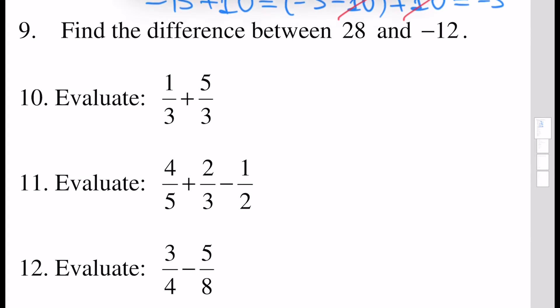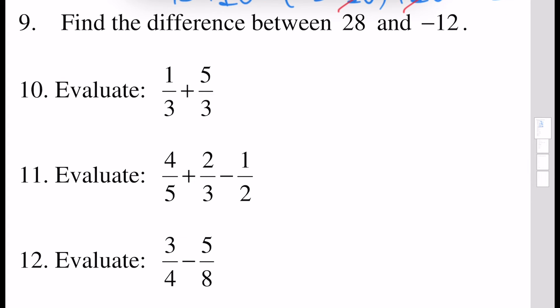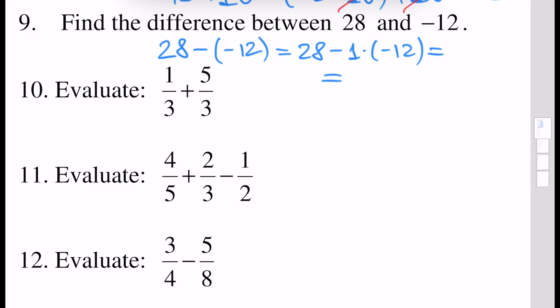Find the difference between 28 and minus 12. 28 minus minus 12 — this is the difference between 28 and minus 12. By definition this can be written as 28 minus 1 times minus 12, and that's why it is equivalent to minus 1 times minus 12. Minus times minus will give us plus, so it will be 28 plus 12 which is 40.